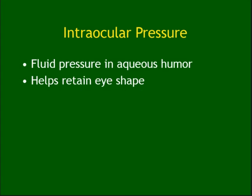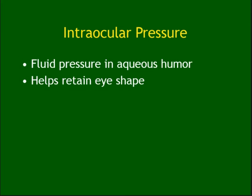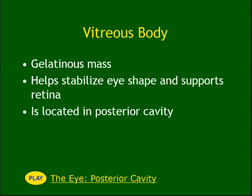Intraocular pressure should exist to keep the shape of the cornea, but if it increases beyond normal, that is called glaucoma. The lens must of course be transparent.